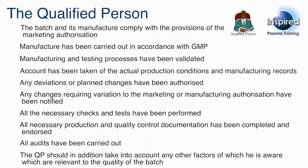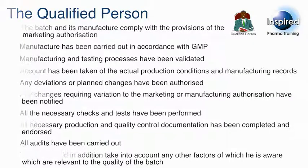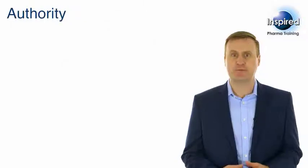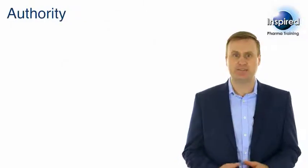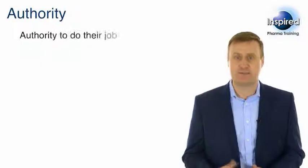Here you can see that there are a large number of areas where a QP must have assurance that the Quality Management System is working correctly. GMP does not state they have to physically do all of these tasks — they just need to ensure that they have been done correctly. There is also the need, in any quality system, to ensure that as well as assigning roles and responsibilities, people also have the authority to do their job.